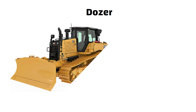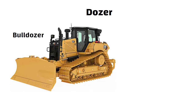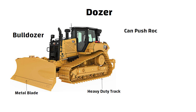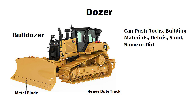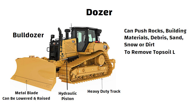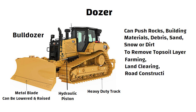Dozer, also known as bulldozer. Dozers consist of heavy duty tracks to move with a metal blade at the front that can push rocks, building materials, debris, sand, snow, or dirt. This blade can be lowered and raised using hydraulic pistons. Bulldozers are used to remove the top soil layer up to a particular depth. They are used in farming, land clearing, road construction, demolition, and home renovation, etc.